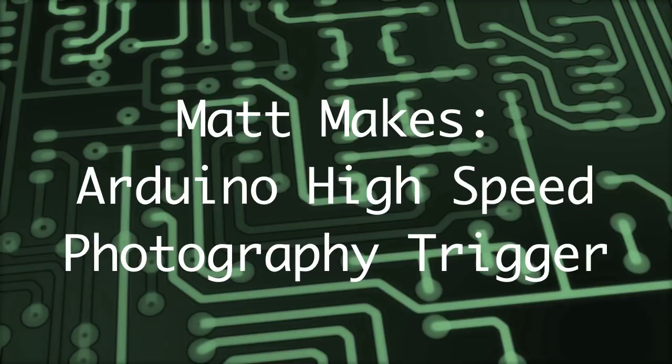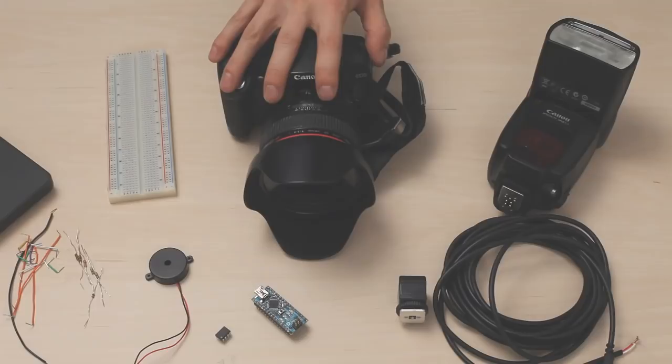Here's what we'll need. First, an SLR or a camera that has a full manual mode, an external flash, an Arduino—any kind will do, but I'm gonna use the Nano for this project.